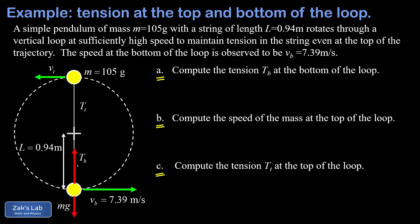The upward tension must be larger than mg because we need a net force pointing to the center of curvature — that's required for circular motion. Applying Newton's second law at the lowest point, taking upward as positive, we get: T_b minus mg equals m times a, where the acceleration is v squared over r, the centripetal acceleration.